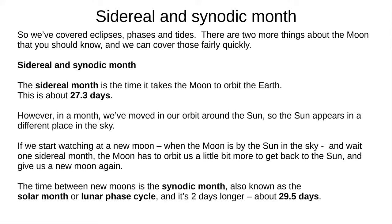The time between new moons is the synodic month, also known as the solar month, or lunar phase cycle. It's about two days longer than the sidereal month, at 29.5 days. You need to learn both of these figures, as they're not given to you in the exam.